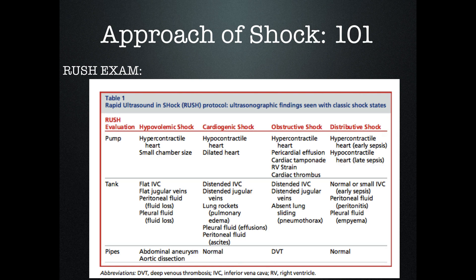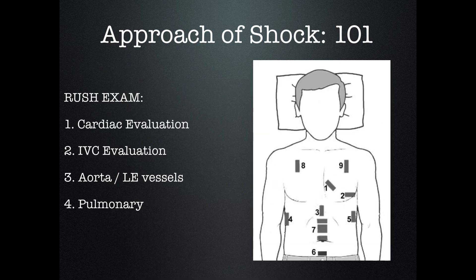If you put it all together, that's basically what we talk about with the RUSH exam — using ultrasound to guide your resuscitation for an undifferentiated hypotensive patient. It doesn't give you the answer; it just gives you pieces. It helps you rule out. Being able to say 'I know this patient's in shock, but I know it's not cardiogenic shock' is a lot more information than you had from the get-go. Use it to help you move through your differential. Cardiac evaluation and IVC are the first two steps, and then depending on what those show, you look for the rest.